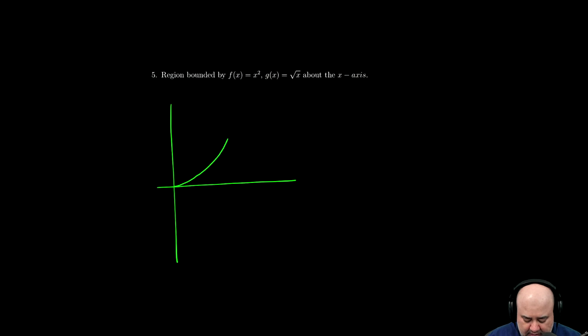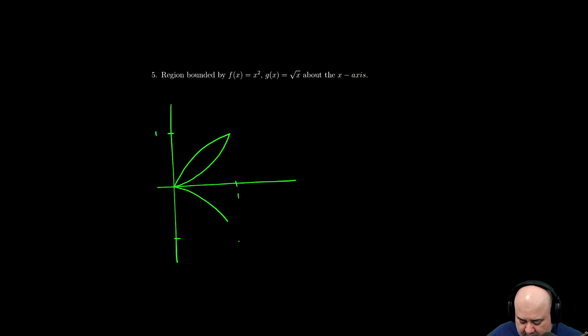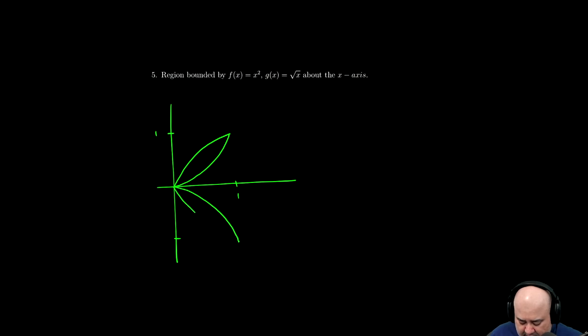So x squared root x, this is x equals one, this is y equals one, y equals negative one is down here somewhere. So then we have the reflection of that, and the other reflection.